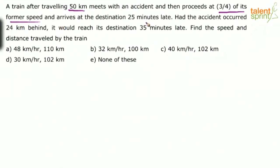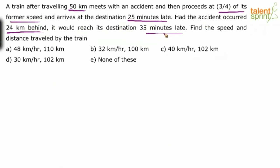And hence it arrives at the destination 25 minutes late. Because of this accident the speed reduced, causing the time taken to reach the destination to increase by 25 minutes. In the alternate scenario, had the accident taken place 24 kilometers behind — meaning at 50 minus 24 = 26 kilometers — it would have reached the destination 35 minutes late.